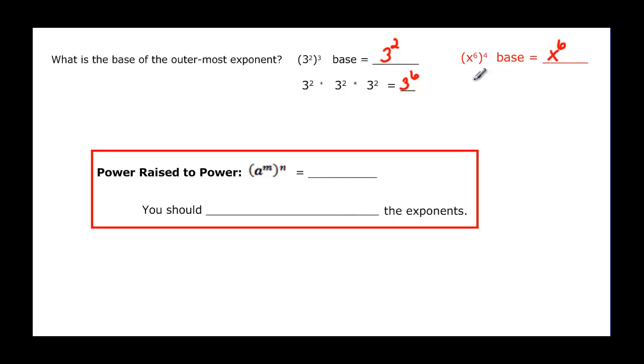And if I did the same thing here I would have x to the sixth times x to the sixth times x to the sixth times x to the sixth. And that's going to be equal to x to the, we will add them up, 6 plus 6 is 12 plus 6 more would be 18 plus 6 more would be 24. So I have x to the 24. So if you come back I had a 2 and a 3 and a final answer of an exponent of 6. A 6 and a 4 exponents and a final answer of 24. Looks like we took and we took our exponents and multiplied them.